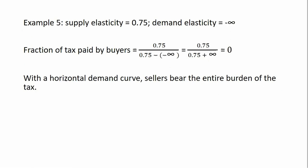Example five: supply elasticity again of 0.75. The price elasticity of demand is perfectly elastic, or minus infinity — here we're dealing with a horizontal demand curve. Plugging these results into the formula, the fraction of tax paid by buyers will be zero. With a horizontal demand curve, sellers will bear the entire burden of the tax.